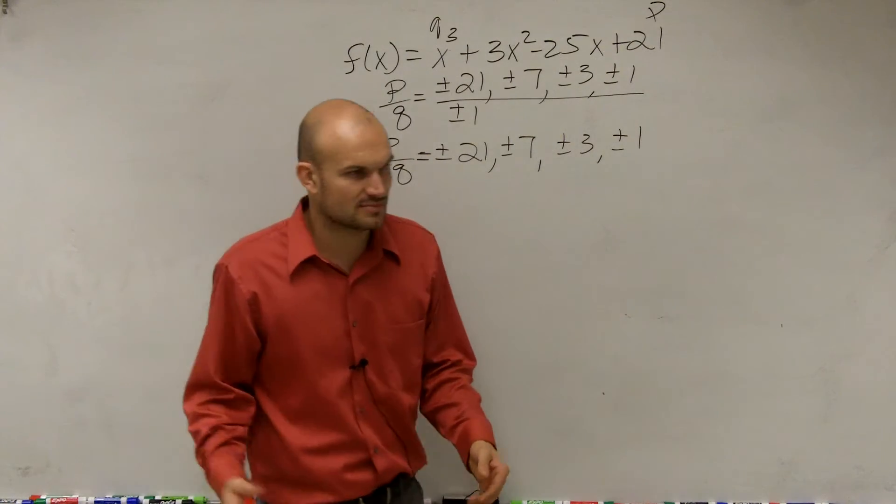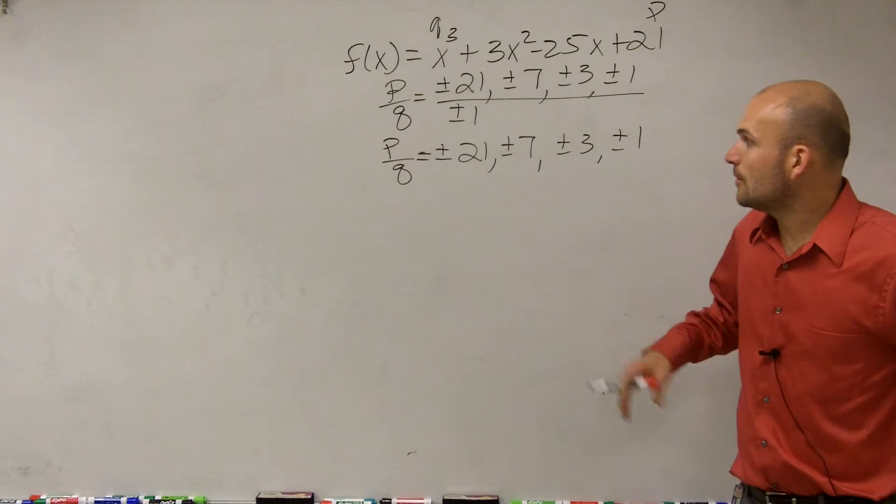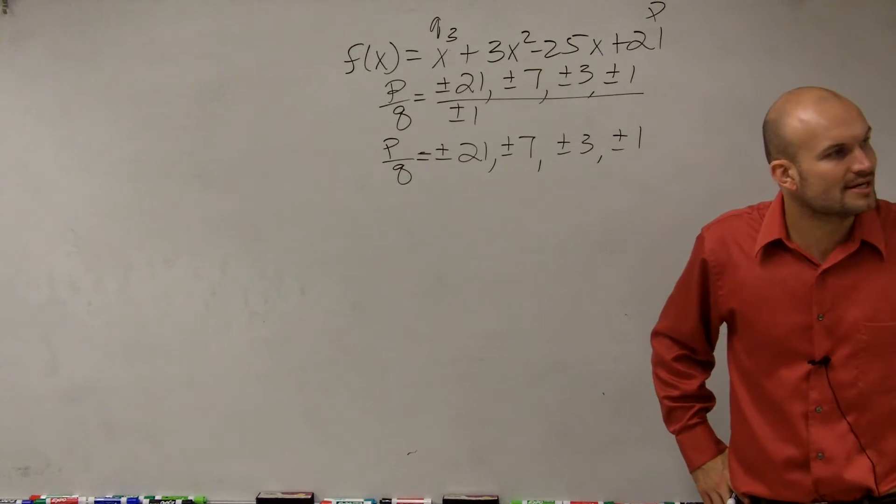The rational zero test tells you all the possible rational zeros are going to be in the form of your factors of your p over your q, which is your coefficient of your leading term. So therefore, if I have a rational, I can still have irrational. I can still have complex. But if it's a rational number, it has to be one of these numbers. Does everybody agree with me? Okay. Come on. I'm telling you this thing. Yeah. So now we need to determine what are the zeros, right?